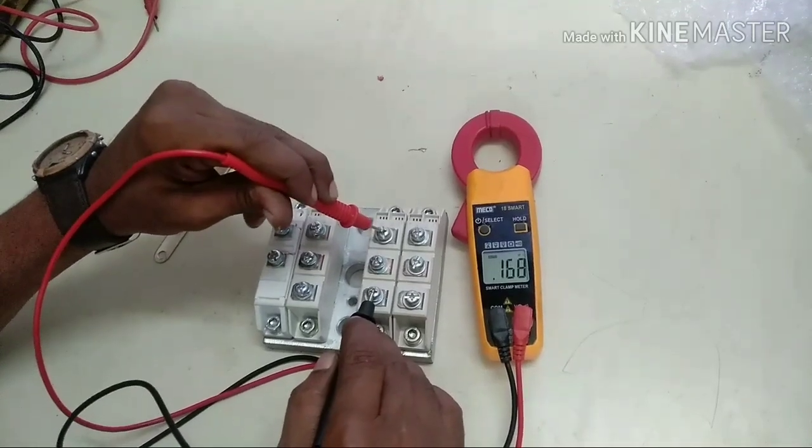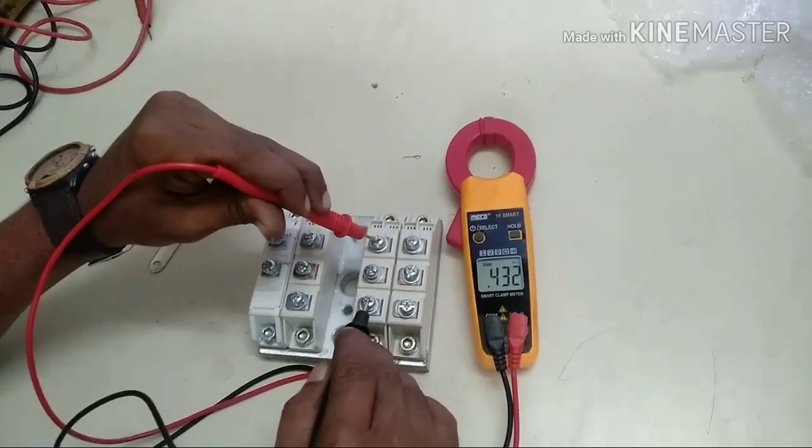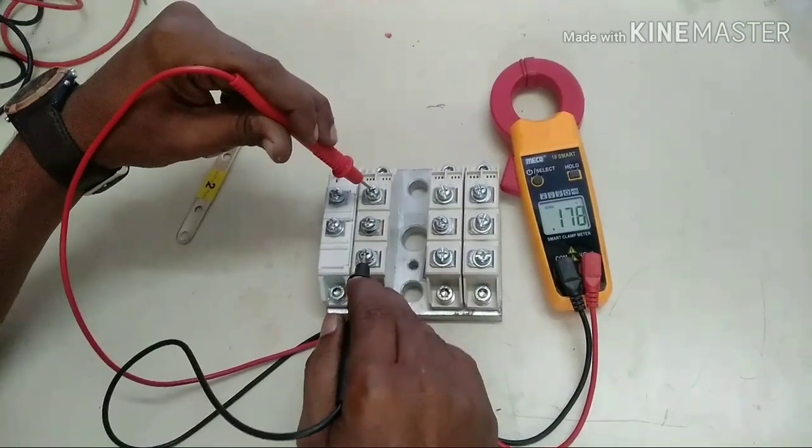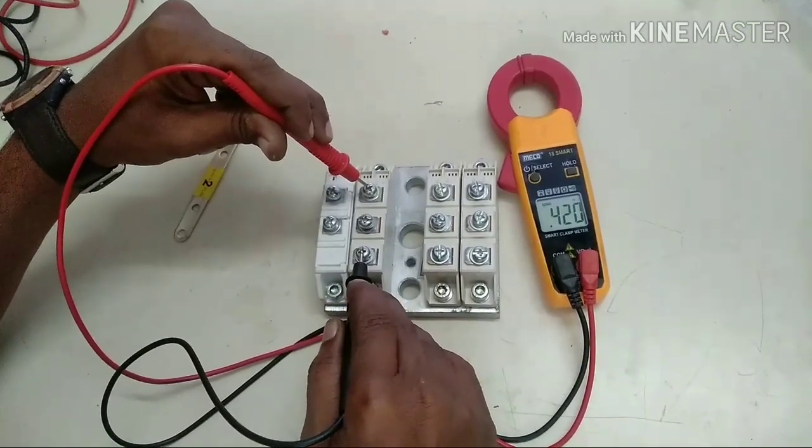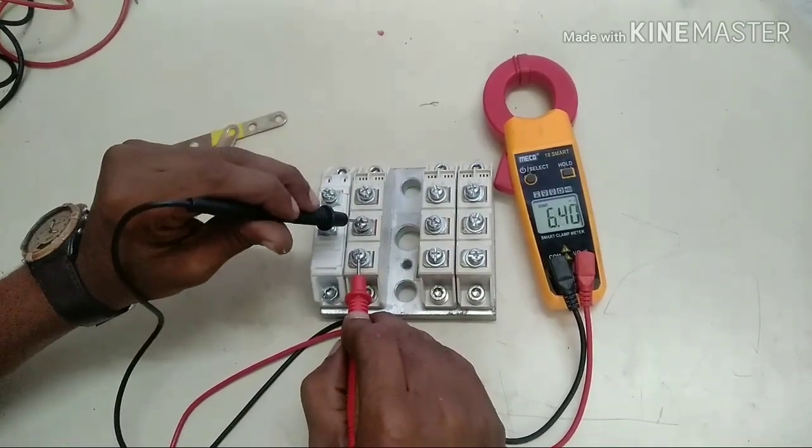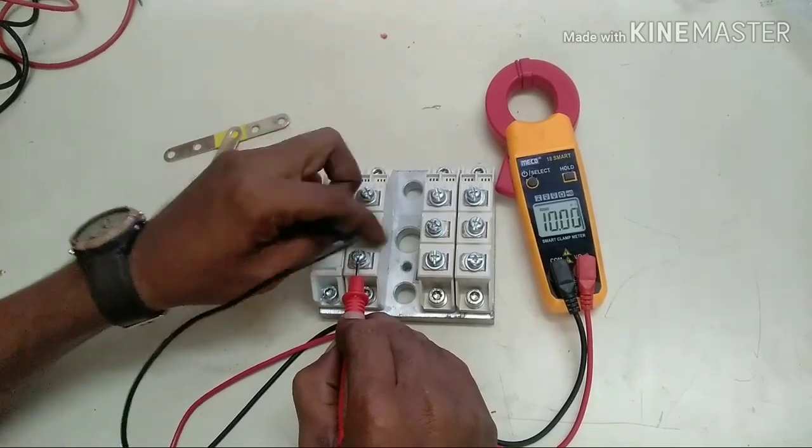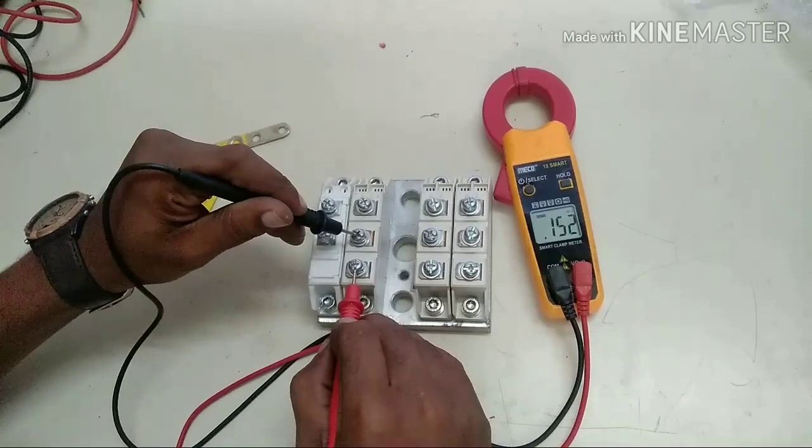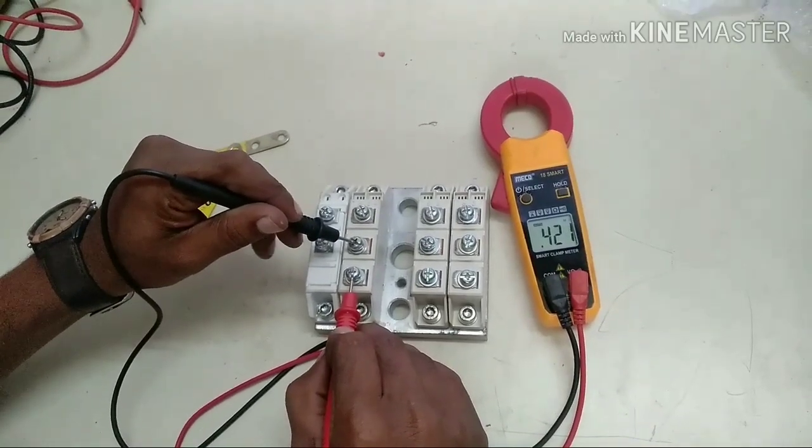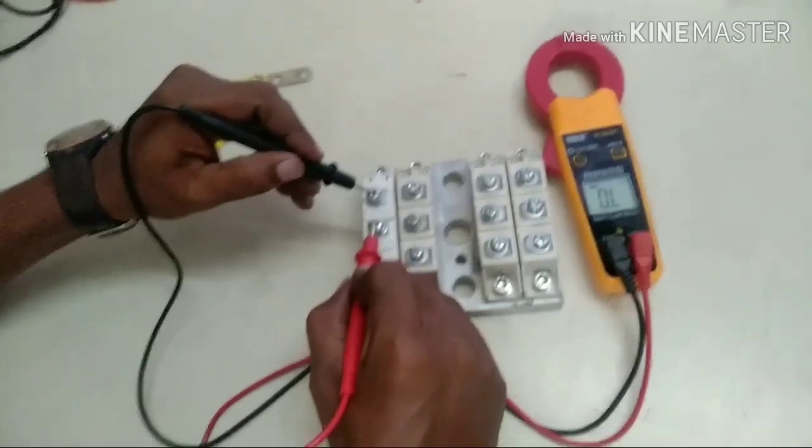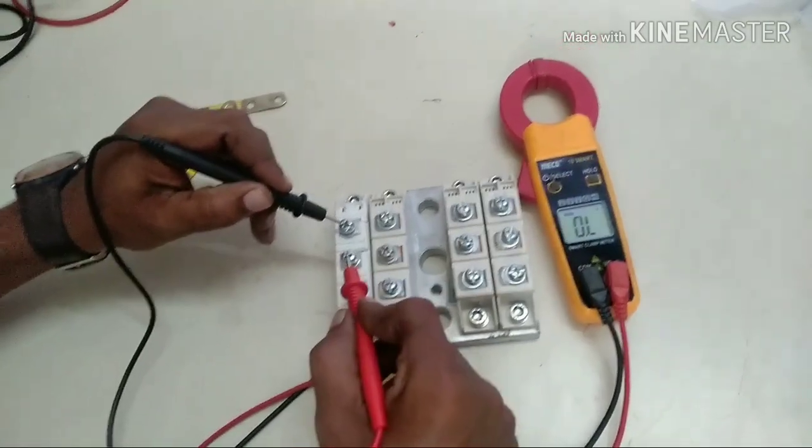Now the third block. You can see the screw is loose - we'll tighten it. Again the value is 0.42, which means these three blocks are good. The fourth block is our surge suppressor.